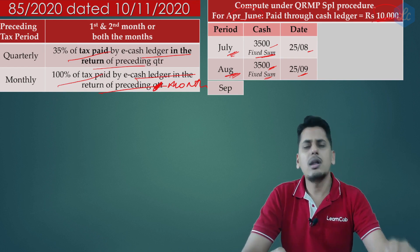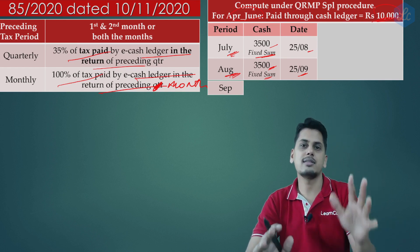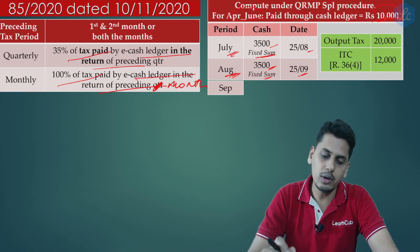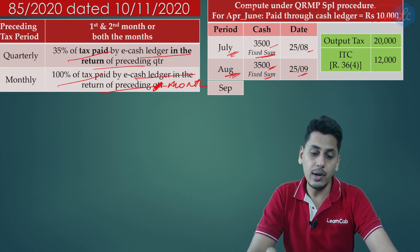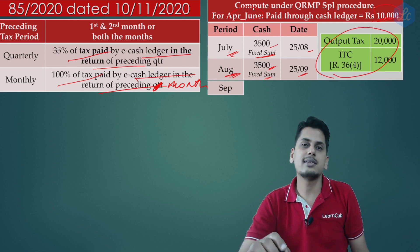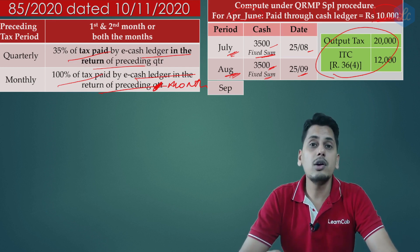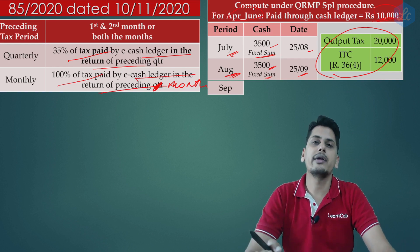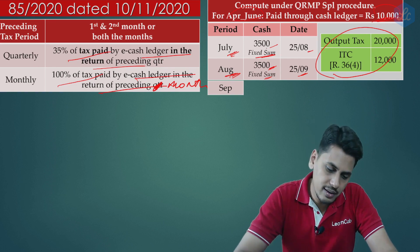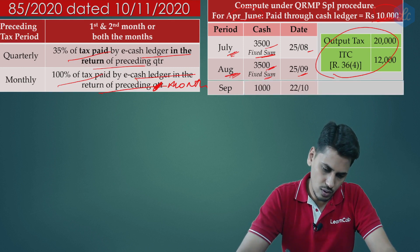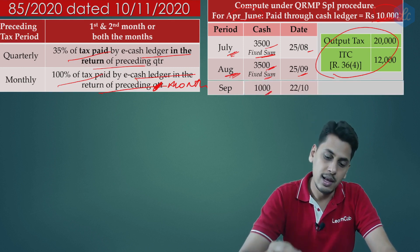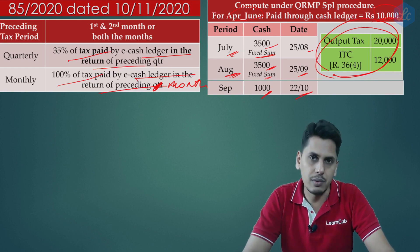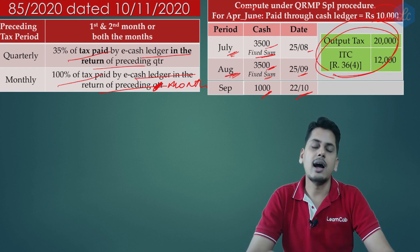For September, take and compute the data of the entire quarter. Say output tax was 20,000 and input tax credit according to Rule 36(4) is 12,000. The amount payable from the electronic cash ledger is 20,000 − 12,000 = 8,000. How much have you already paid? 3,500 + 3,500 = 7,000. The difference is 1,000 rupees to be paid from your electronic cash ledger. Include all these figures in the quarterly return and pay this 1,000 when filing the return on 22nd of October. This is how the QRMP scheme functions under the fixed sum method.